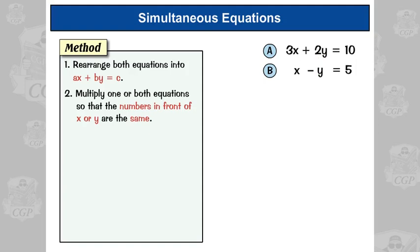So I always multiply by the smallest number I can, so I'm going to multiply it by two. So we have to multiply all of this by two, so this becomes 2x, minus y becomes minus 2y, and five becomes ten. So that's our new equation.